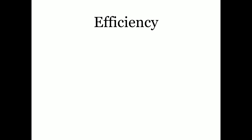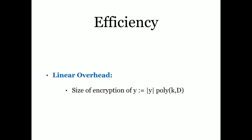Let me define the efficiency guarantee we are going to use — what is called the linear overhead property. We require that the size of the ciphertext should be the size of the message times a polynomial in the security parameter. In Rachel's talk, there was a similar notion defined for FE for NC0, but they required the size of the encryption to be the size of the circuit times a polynomial in the circuit parameter — here it's constant.